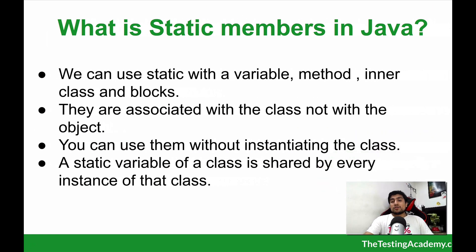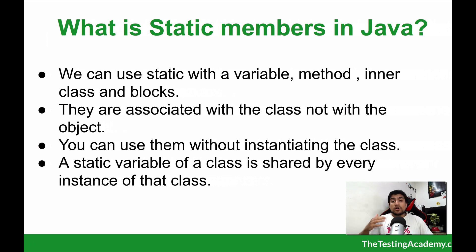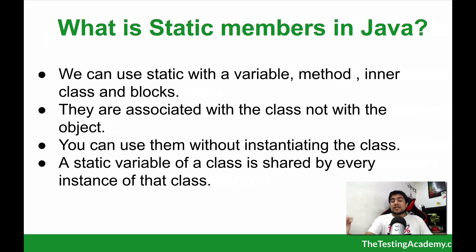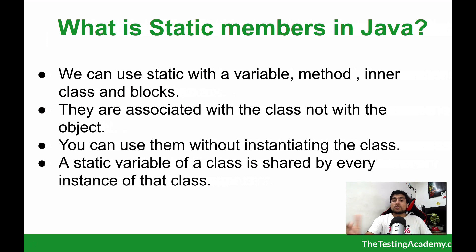Before moving on, let's reiterate what a static member is in Java. Since we are making our own automation framework, I want you to understand these important concepts. Static members can be used with variables, methods, as well as inner classes and blocks. Generally, static members are associated with the class, not with the object. So you can directly use them without creating an instance of a class — just using the class name and the variable you want to use.